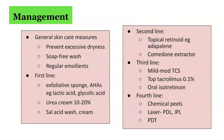In terms of management options for keratosis pilaris, firstly there are general skincare measures to reduce irritation and triggering, including prevention of excessive dryness, using soap-free washes, and regular moisturising with emollients. First-line treatment options include exfoliative sponges, AHAs including lactic acid and glycolic acid, urea cream at 10–20%, or salicylic acid wash or creams. Second-line treatment options include topical retinoids such as adapalene, and comedone extractors.